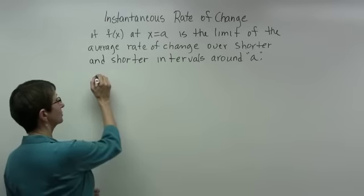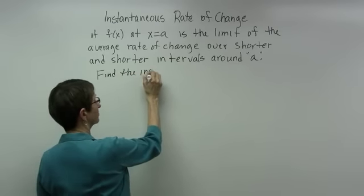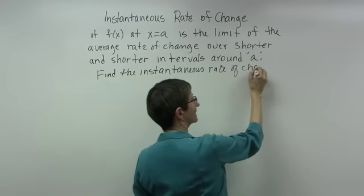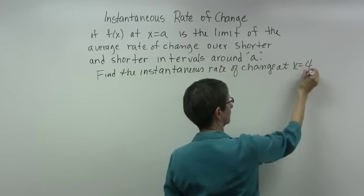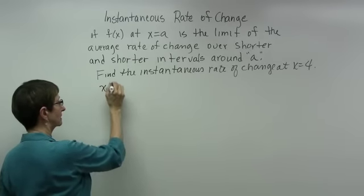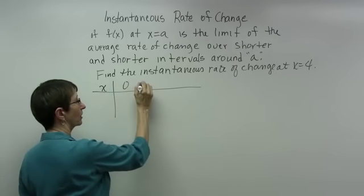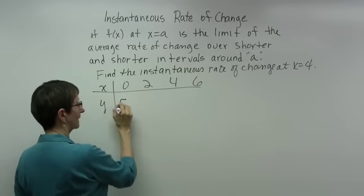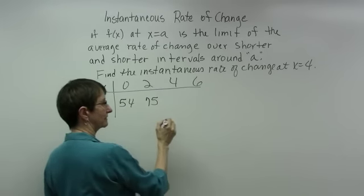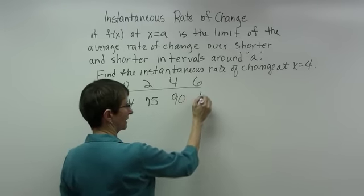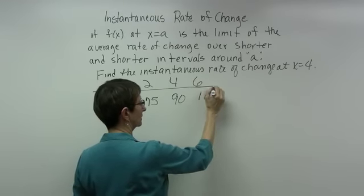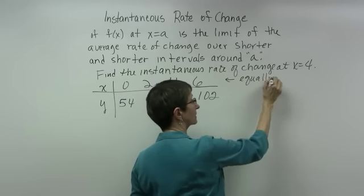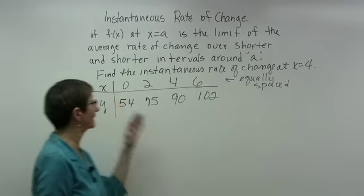Let's look at our first example. We want to find the instantaneous rate of change at x equal to 4. Our data has x values 0, 2, 4, and 6, with y values 54, 75, 90, and 102 respectively. Notice that these x values are equally spaced, which is important here and in other applications.